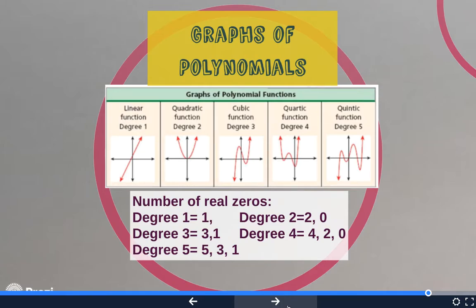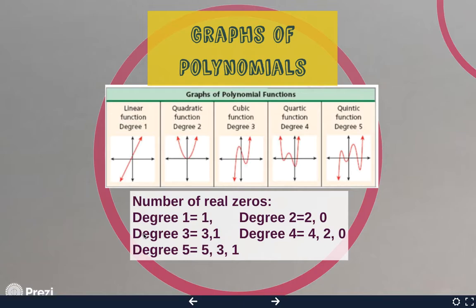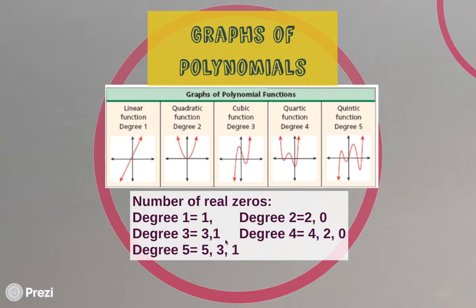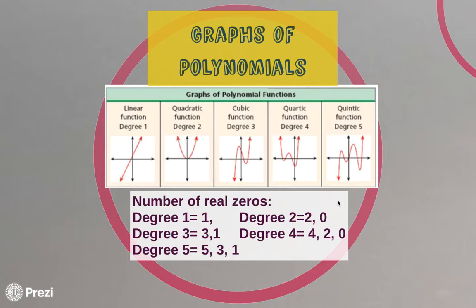Now let's talk about some characteristics of even degree functions — degree two, four, six, etc. — and odd degree functions — degree one, three, five. For odd degrees: degree one has one real root; degree three could have three or one real root; degree five could have five, three, or one real root. So odd degree functions always have an odd amount of real zeros. Also, with odd degree graphs, the arrows point in opposite directions — one points up and one points down.